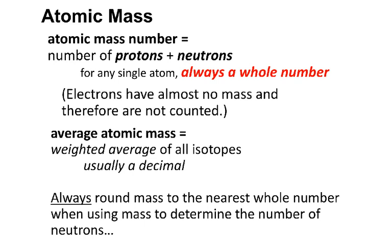The atomic mass number is equal to the number of protons and neutrons. If you're talking about a single atom of an element, it has to be a whole number — the mass number has to be a whole number. Using chemistry, you can't change the number of protons, and it turns out you also can't change the number of neutrons. Remember that electrons have, for our purposes, no mass, so we're not going to count those.